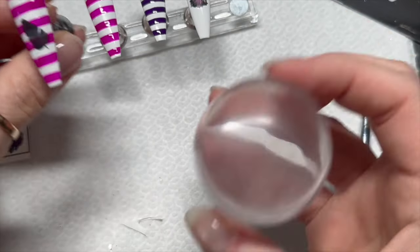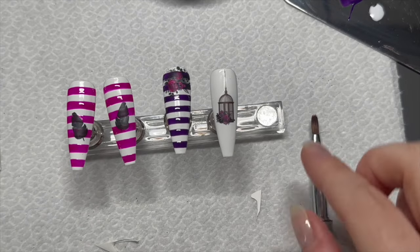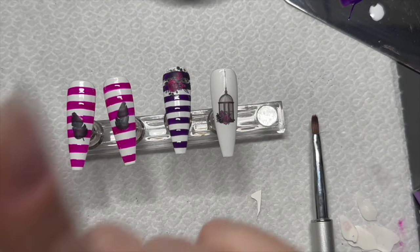I'm just going to stamp these on the pink stripe nails. I'm going to do this one with the feather going in the other direction.